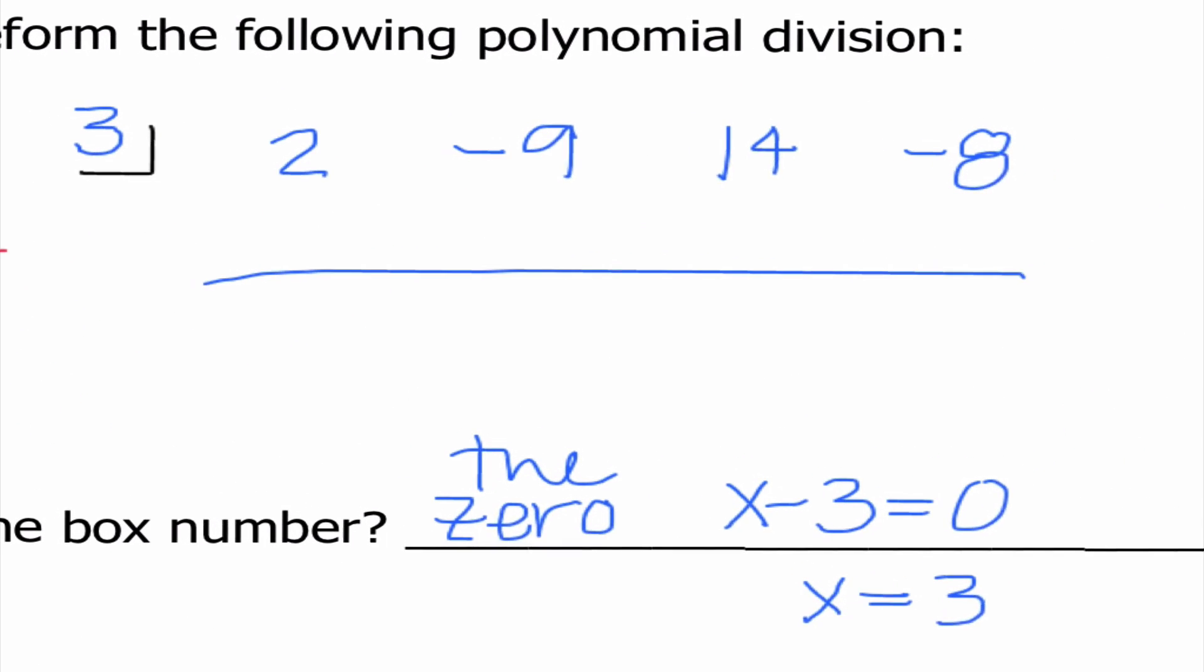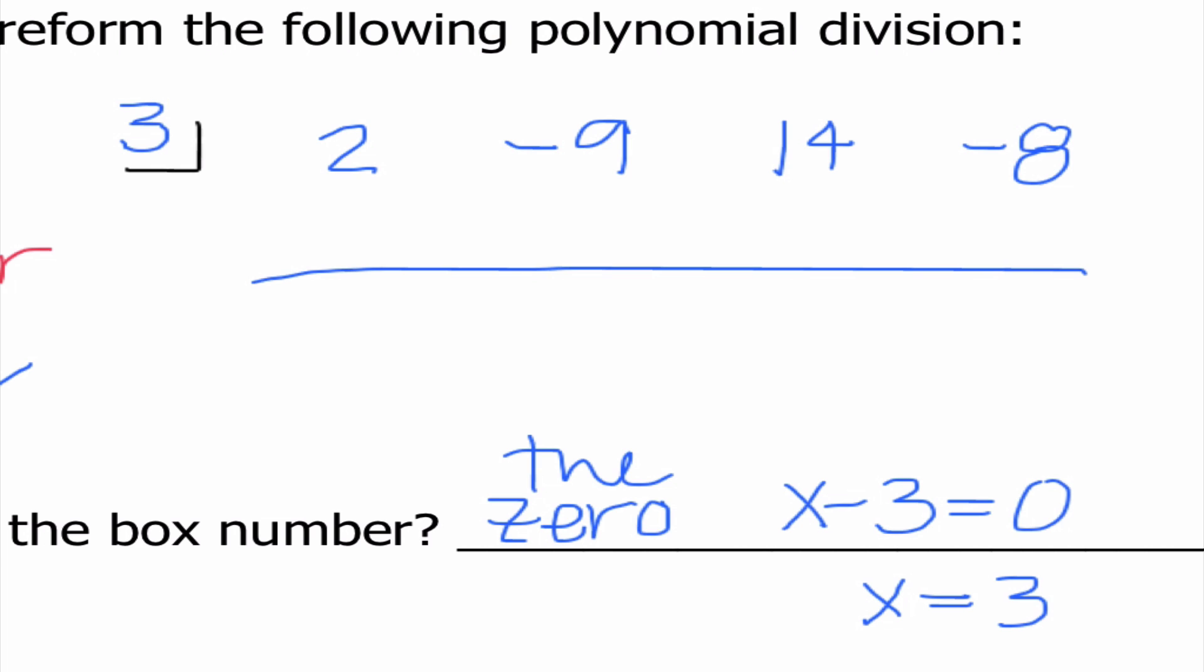And the way that we work with synthetic division, we always begin by bringing down the first number. So I'm going to bring down that 2. Now I need to multiply 2 times 3 is 6. And I'm going to add down my column. Negative 9 plus 6 is negative 3. And now we start the process over again. Negative 3 times 3 is negative 9. When I add down my column, 14 plus negative 9 is 5.